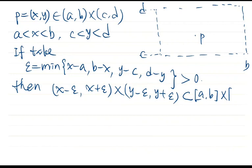Because this epsilon is the least distance from the point P to the boundary of this rectangle. Therefore, using this geometric picture, you can prove this inclusion.